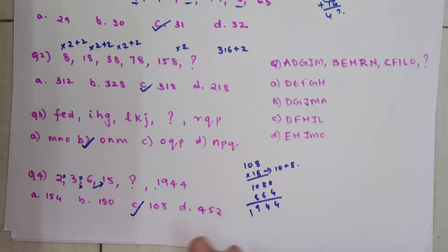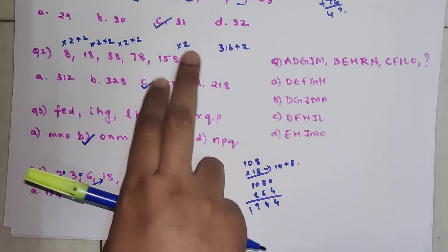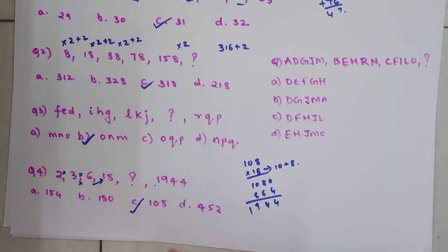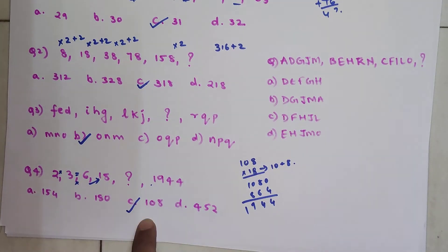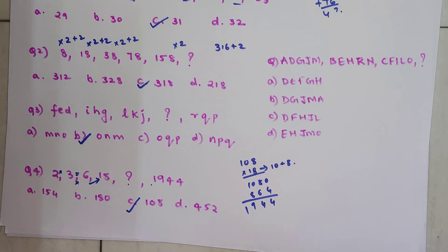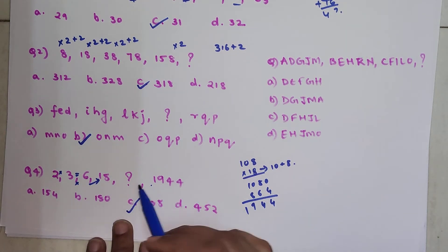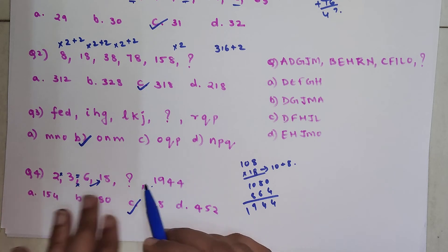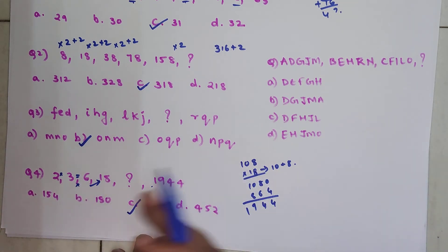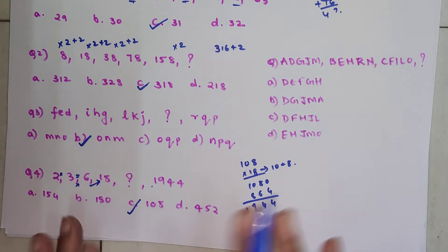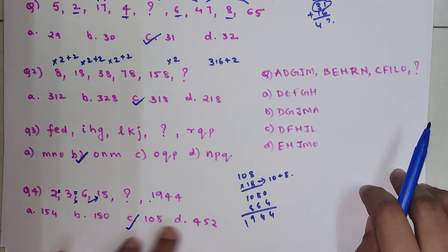I request all of my students that whenever you have something like this where you need to find an element which is in between the series, you can cross-verify your answers. Because you know that if the entire pattern is being followed, then the next element also should obey that pattern. If it is obeying, that means the answer which you have found out is correct. If it is not, means you have done some mistake. This is also one way of dealing with these kinds of questions.